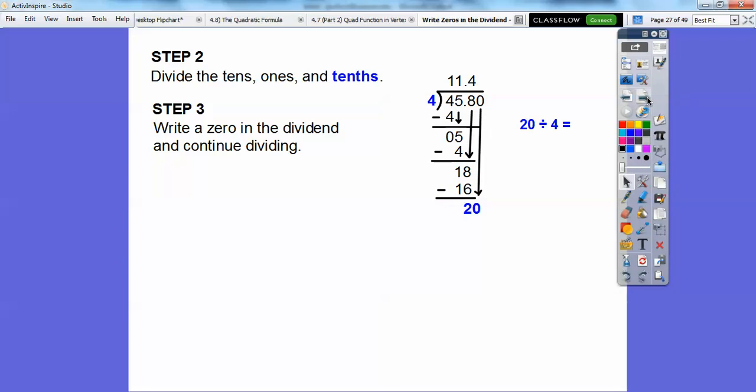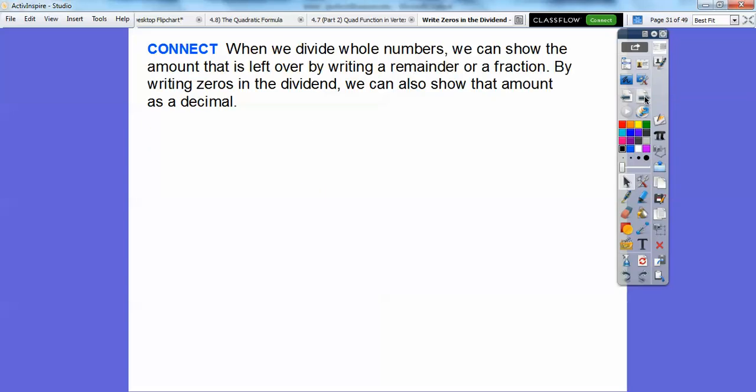Now we just continue dividing. Twenty divided by four is going to give us five. Five times four is twenty. Finally, we get a remainder of zero. So Brett's speed was, it's sitting right at the top, 11.45 miles per hour. Brett goes a lot faster than that, I know that.